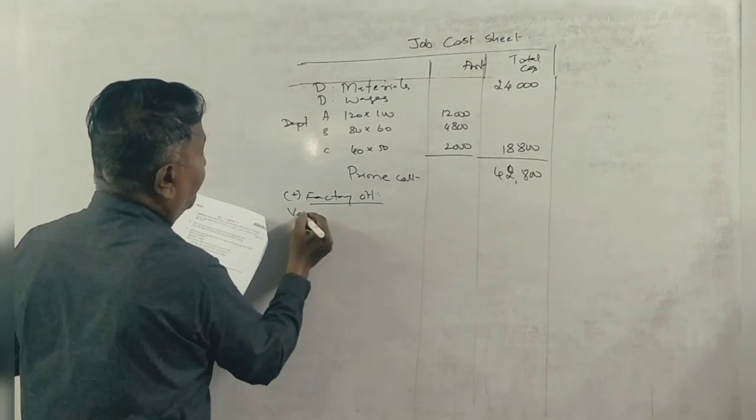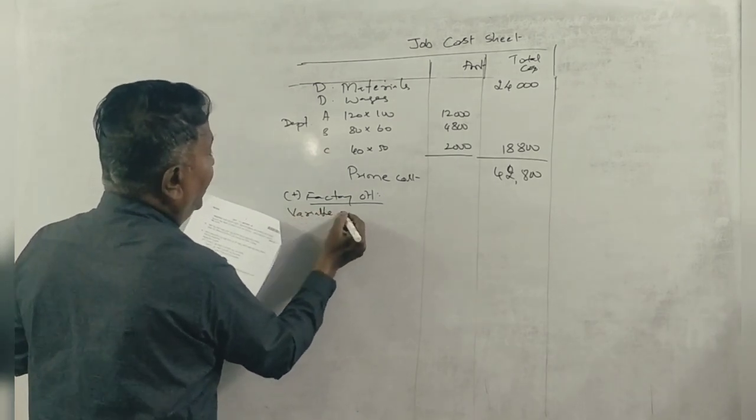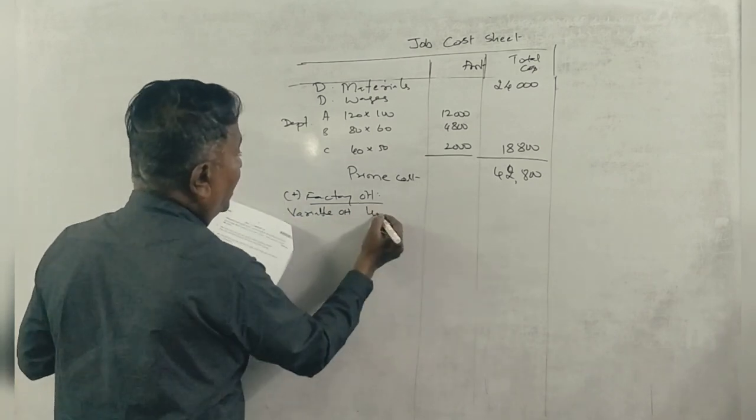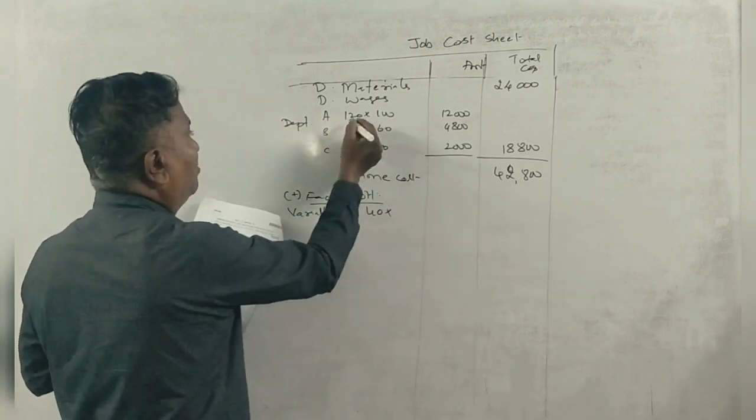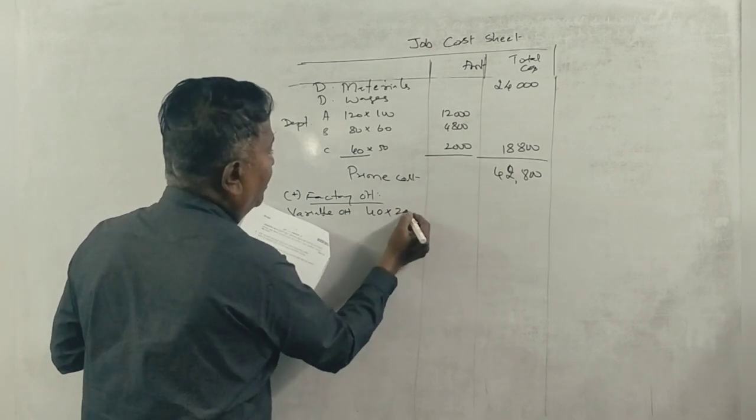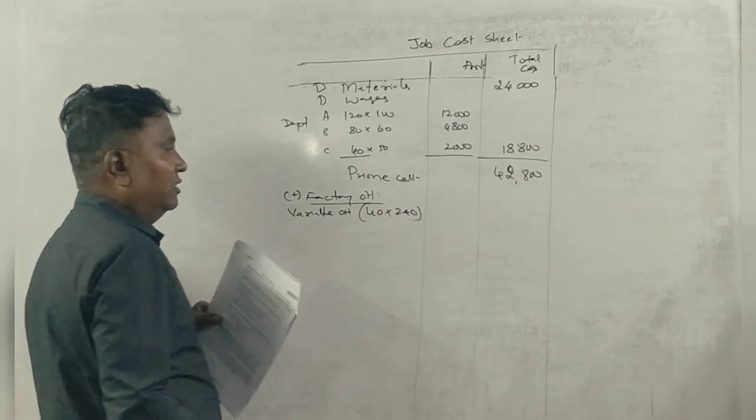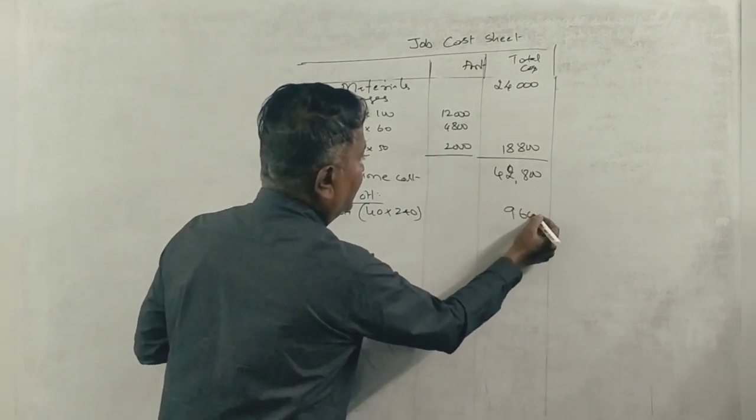Variable overheads: 40 rupees per hour. Total hours? 240 hours. 240 hours into 40 is ₹9,600. This is the variable overhead cost.